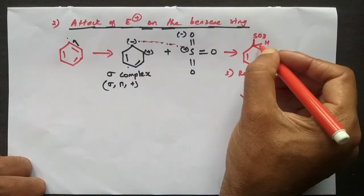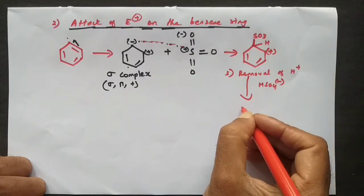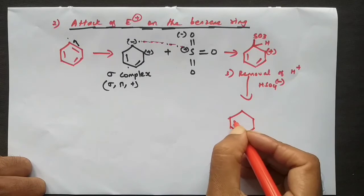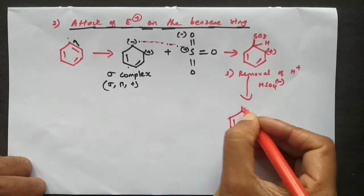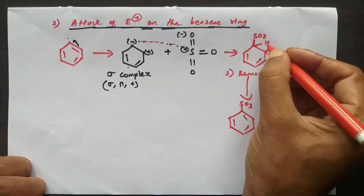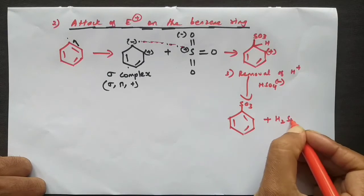Leaving the two electrons here that can be used for making the double bond once again. So now what happens, the structure I will write like this. Now we got the SO3, and this hydrogen will come out as H+ and react with the HSO4- to form H2SO4.